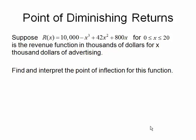Suppose R is equal to 10,000 minus x cubed plus 42x squared plus 800x for x between 0 and 20. The revenue function is in thousands of dollars for x thousands of dollars of advertising. So essentially, if you spend some money on advertising, you're going to have some changes in revenue. We want to find and interpret the point of inflection for this function.